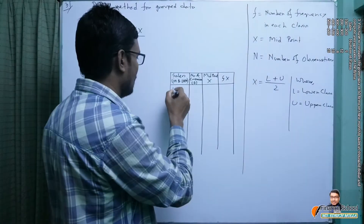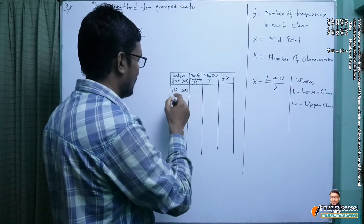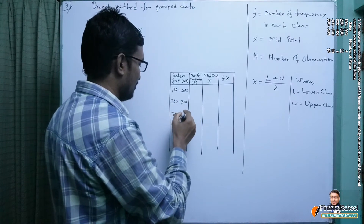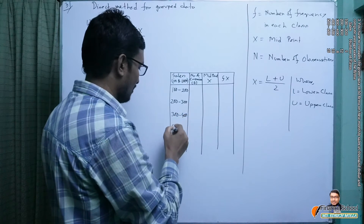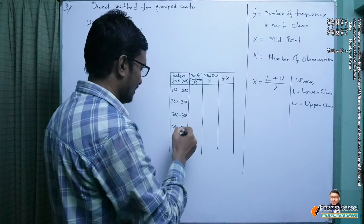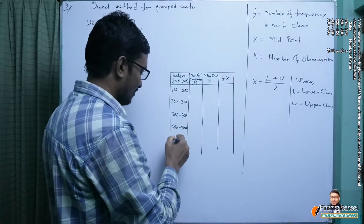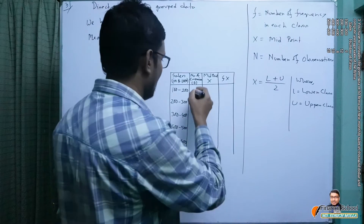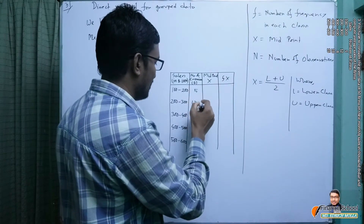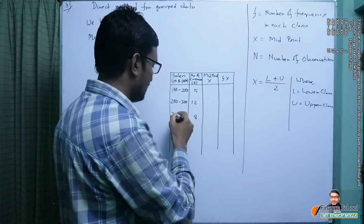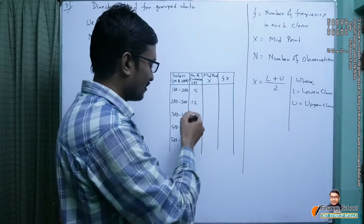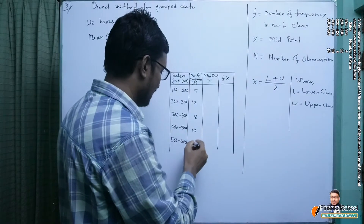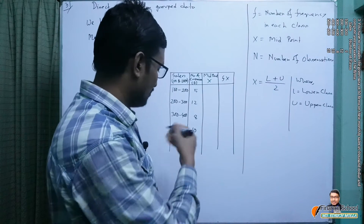The class intervals given are: 100–200, 200–300, 300–400, 400–500, and 500–600 thousand dollars. The corresponding number of companies (frequencies) are 5, 12, 8, 10, and 15 respectively.